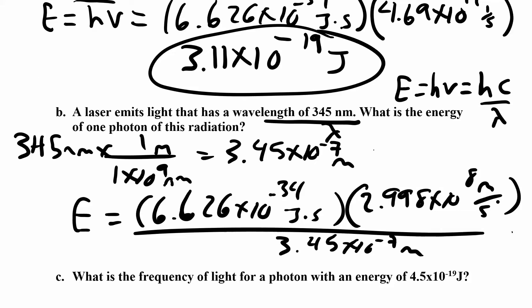And so your seconds cancel, your meters cancel, and you end up with something in joules. And I totally ran out of space. The joules that you get are 5.76 times 10 to the negative 19 joules.